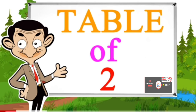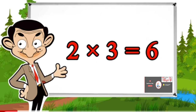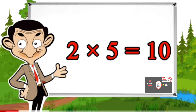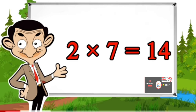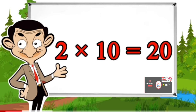2×1=2, 2×2=4, 2×3=6, 2×4=8, 2×5=10, 2×6=12, 2×7=14, 2×8=16, 2×9=18, 2×10=20.